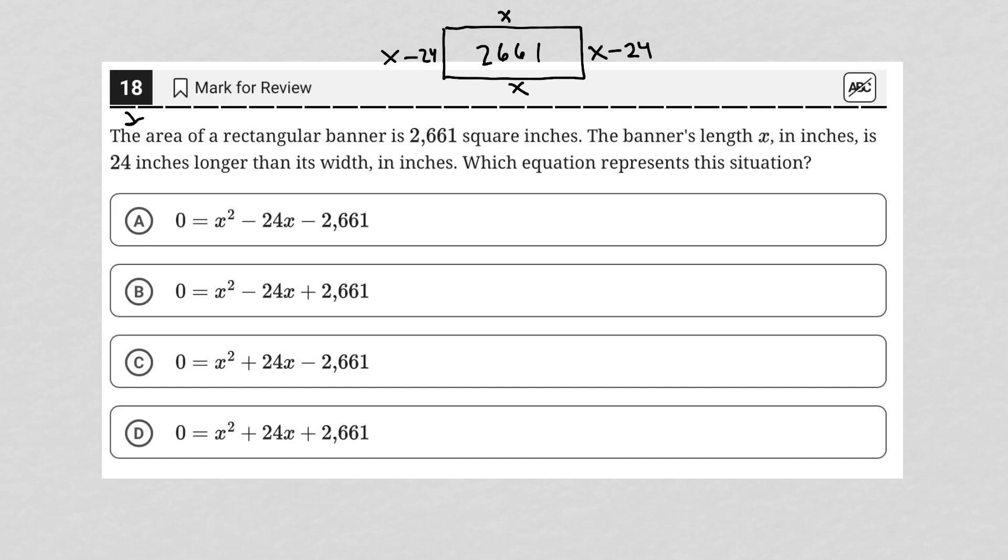Which equation represents this situation? Well, what do we know? The question told us that the area is 2,661. We know that we find the area of a rectangle by multiplying the length times the width. So I'm going to simply write that out. This would be x times x minus 24 is equal to 2661.